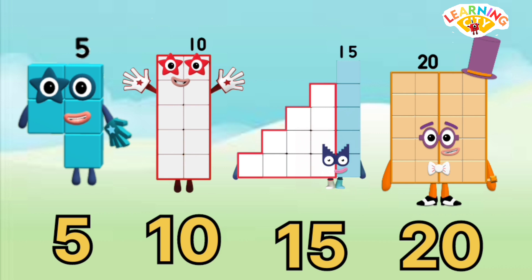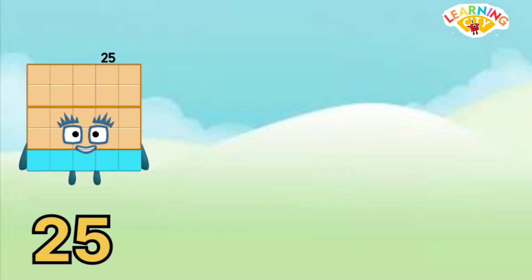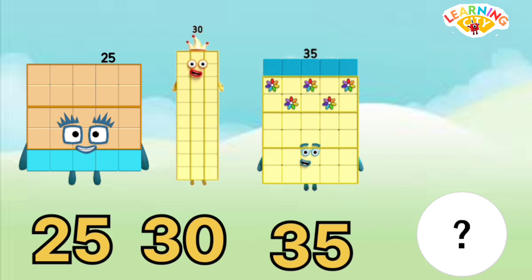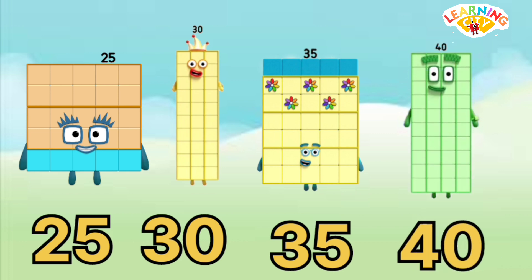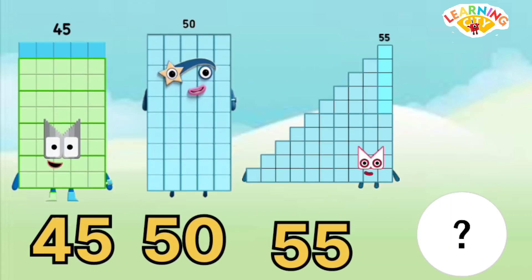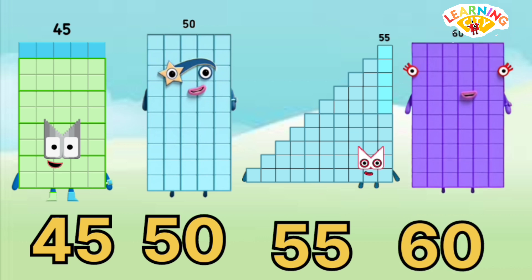5, 10, 15, 20, 25, 30, 35 — the missing number is 40. Next: 25, 30, 35, 40, 45, 50, 55 — the next number is 60.